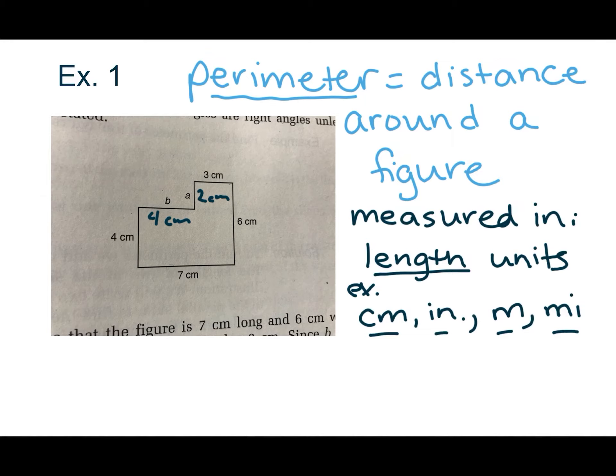All right, so we're just going to add up all the different sides here. So we have 6, we're going to start here. We have 6 centimeters, plus 3 centimeters, plus 2 centimeters, plus 4 centimeters, plus another 4 centimeters, plus 7 centimeters.